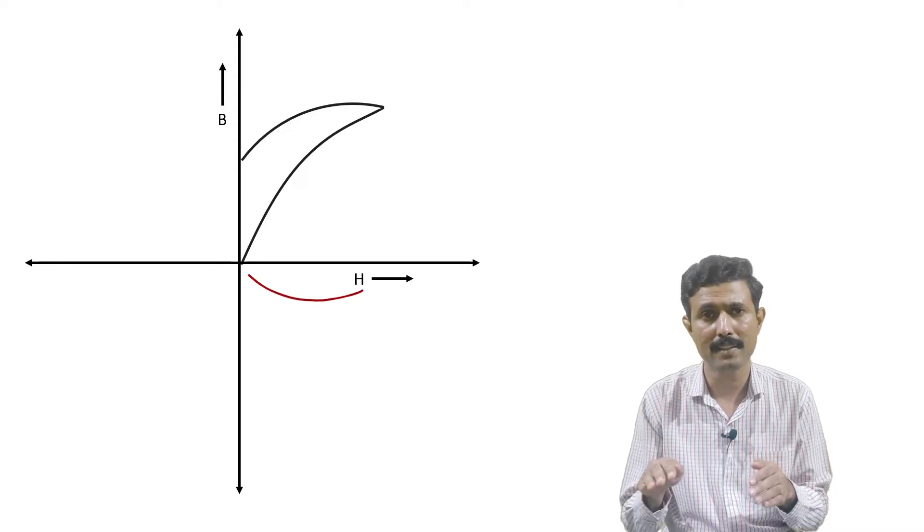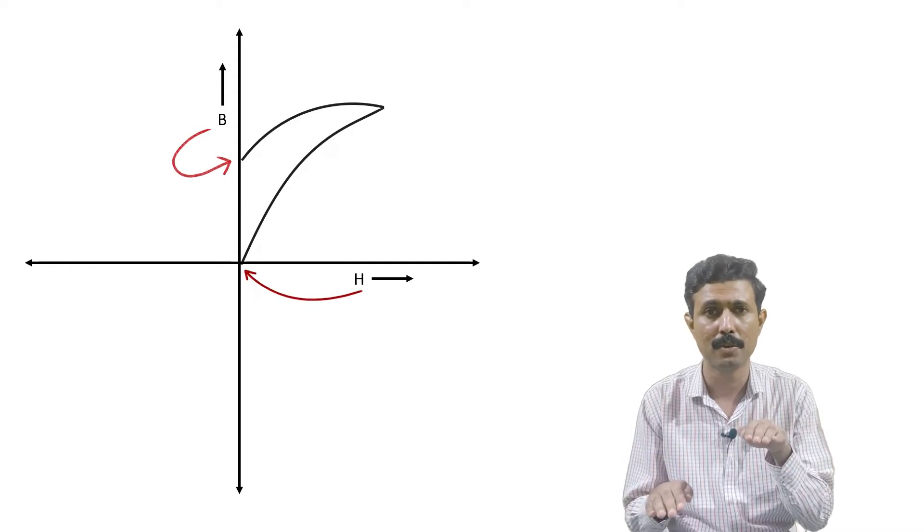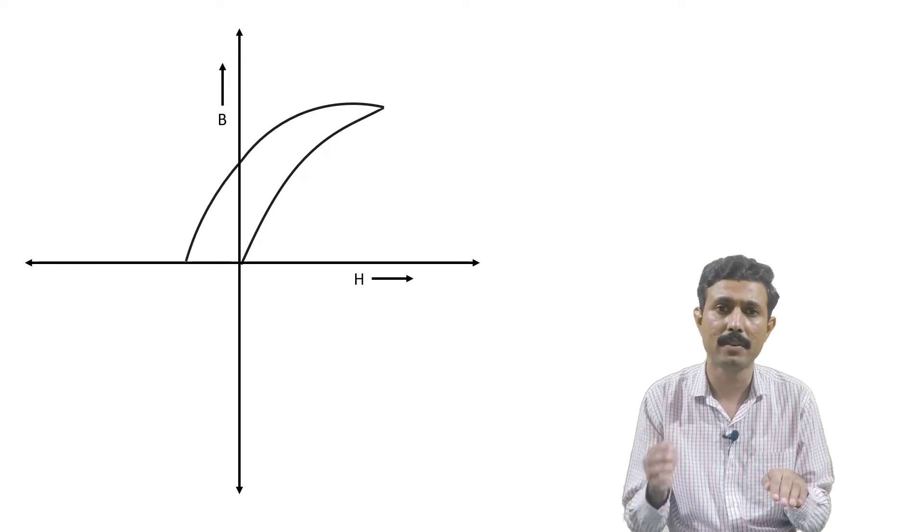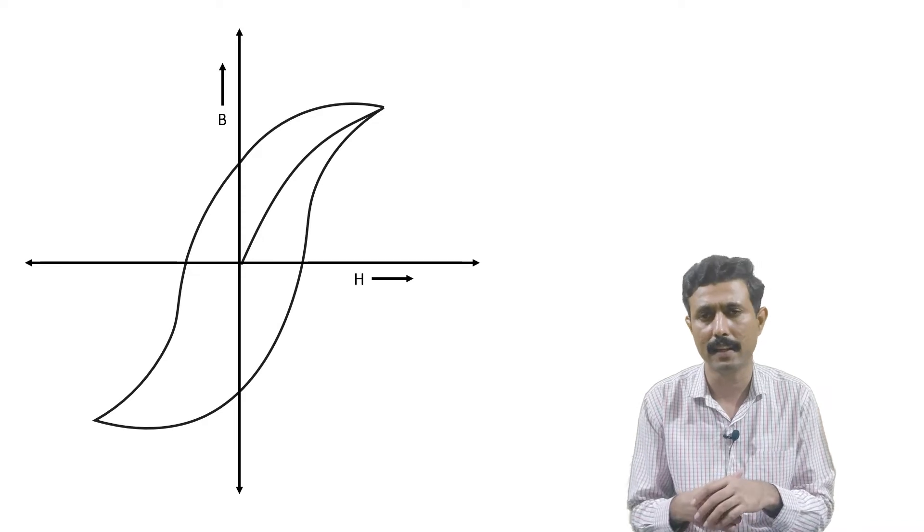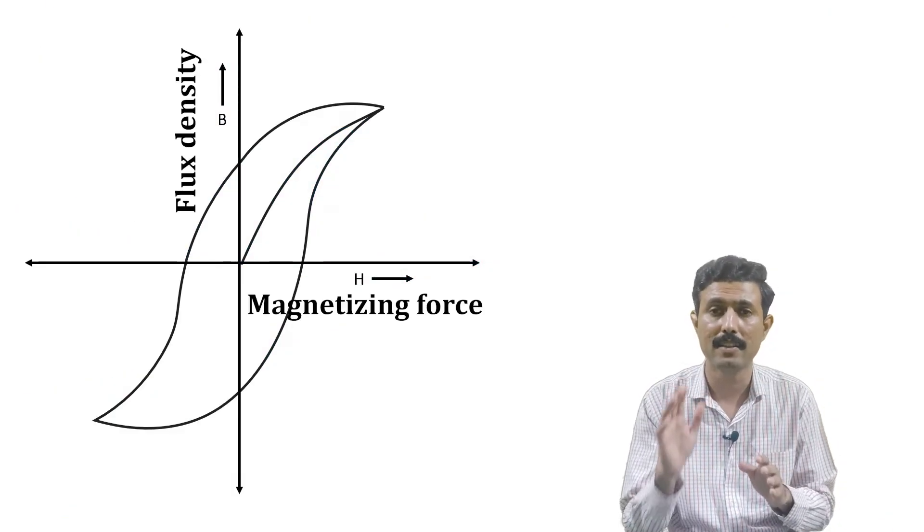So when we have reduced magnetizing force to zero, but still the flux is not reduced to zero. So in order to reduce the flux density to zero, we need to magnetize the material in reverse direction, and then the same process will take place again. So the relation between magnetizing force H and the flux density B can be expressed as the BH curve or the hysteresis loop.